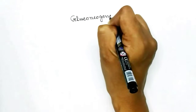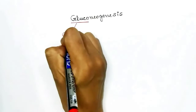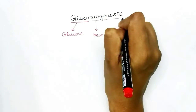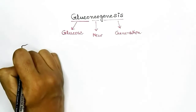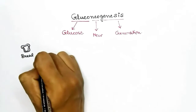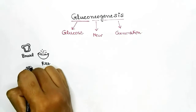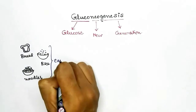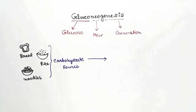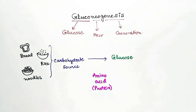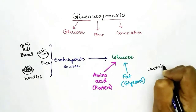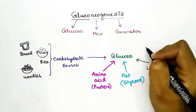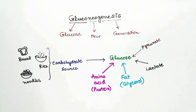In this video we're going to talk about gluconeogenesis. Breaking the word down: 'gluco' means glucose, 'neo' means new, and 'genesis' means generation — that is, generation of glucose from new sources. The basic source of glucose is carbohydrate-rich food such as bread, rice, and noodles, but our body can also produce glucose from amino acids, glycerol, lactate, and pyruvate.